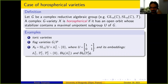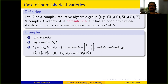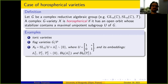The reason to consider horospherical varieties is that they form an intermediate class between toric varieties and spherical varieties. Toric varieties have a very nice combinatorial description but there are not many of them — for instance, smooth projective toric varieties with Picard rank 1 are just projective spaces. Spherical varieties form a much larger class but their combinatorial description is harder, especially for non-experts.